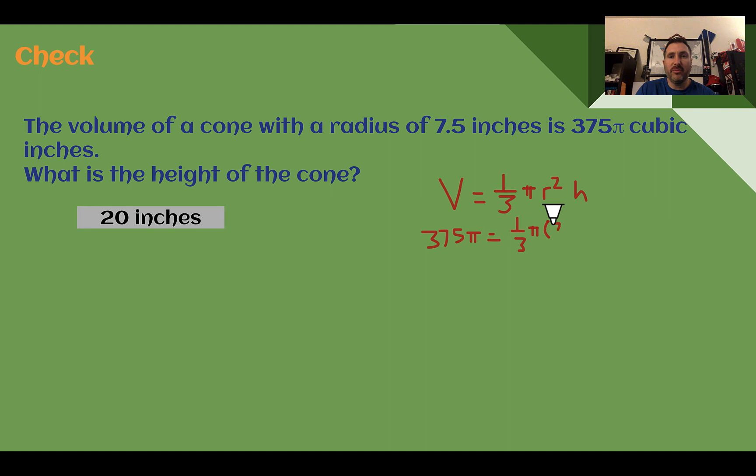So 7.5 squared. I'm going to use a calculator to figure out what 7.5 to the second power is. And that's 56.25. There's still one third. I'm going to show that dividing by 3 so I can kind of get rid of that fraction there. And that was my 56.25. This is still multiplied by pi.